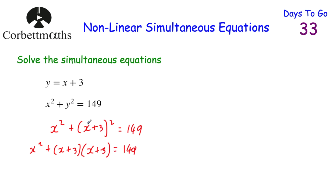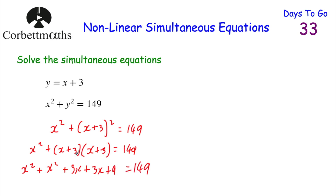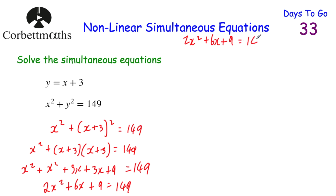We need to expand these brackets. x times x is x squared, x times 3 is plus 3x, 3 times x is plus 3x, and 3 times 3 is 9, so that equals 149. Simplifying the left-hand side: x squared plus x squared is 2x squared, 3x plus 3x is plus 6x, plus 9, equals 149. So we've got 2x squared plus 6x plus 9 equals 149.